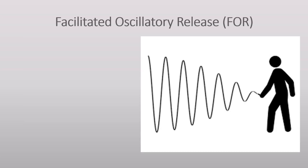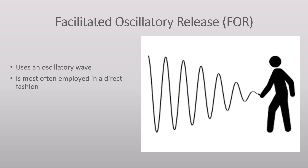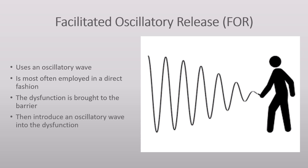To treat with FOR, we use myofascially connected tissues to introduce an oscillatory wave into the dysfunctional tissues. It is most often applied in a direct fashion because taut tissues better propagate waves than loose tissues do — just think of how a guitar string needs to be taut in order to vibrate with sound. So first, move the dysfunctional part in the direction it doesn't want to go, i.e. towards the barrier, in order to sufficiently increase the tension in the tissues that are to be treated, and then introduce a wave from a distant part so it travels down into the dysfunction, so the dysfunctional tissues will get caught up into the motion of the functional tissues.